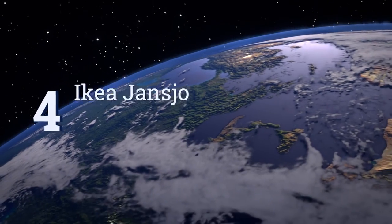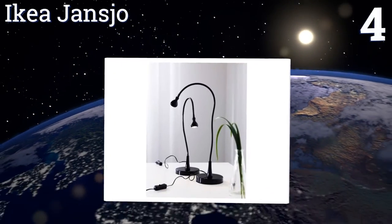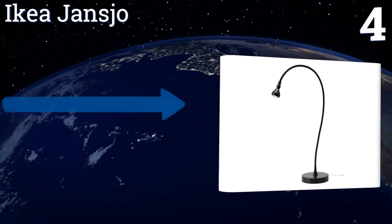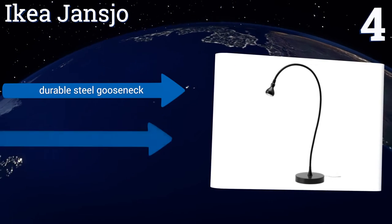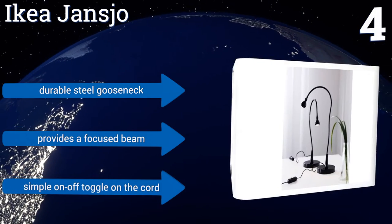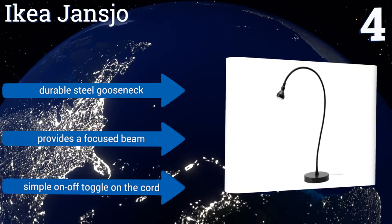At number 4, the IKEA Jansjo provides style and quality at an affordable price. Available in a variety of colors, the slim design effectively illuminates your work area without taking up much space, and is rated to last 20 times longer than incandescent bulbs. It features a durable steel gooseneck, a focused beam, and a simple on-off toggle on the cord.